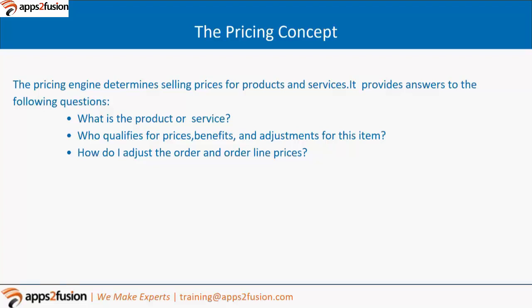Now the pricing concepts — the pricing engine determines the selling price for products and services. It answers three key questions: what is the product or service you want to price, how does that product or service qualify for price benefits or adjustments, and how do I adjust the order and order line prices? The pricing engine is a program that Oracle uses with modifiers, qualifiers, pricing agreements, pricing attributes, and all those things which gets called when you are trying to get the price.